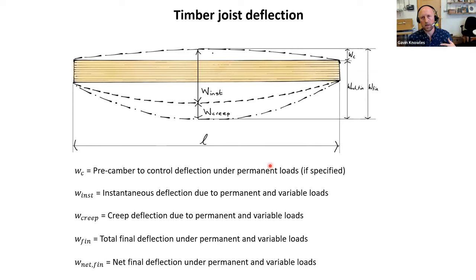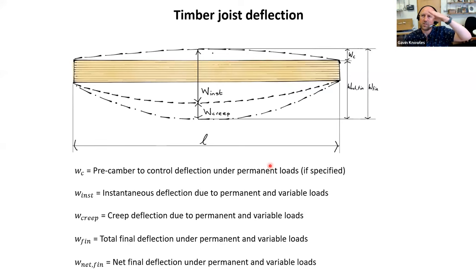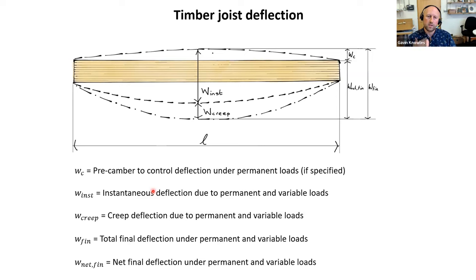Now jumping into deflection. To carry load the beam must deflect — we get different types of deflection depending on loading and time. Timber creeps over time, like concrete — it deflects and doesn't fully recover. A simple example: kitchen shelves loaded with tins gradually bow over time. We need to consider instantaneous deflection and long-term creep deflection. We can pre-camber to counteract instantaneous deflection under permanent load.